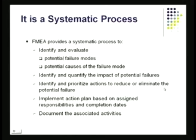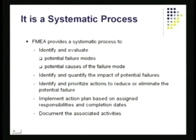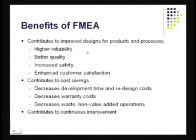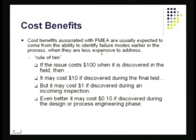FMEA is a systematic process: you identify, evaluate, quantify, prioritize, plan actions, and document activities so they can be followed up later. The benefits include higher reliability, better quality, increased safety, enhanced customer satisfaction, cost savings, and continuous improvement. For example, if a problem costs $100 when discovered in the field, it may cost only $10 if discovered during final test, and only $1 if discovered during incoming inspection.